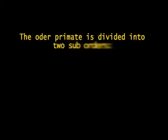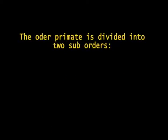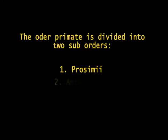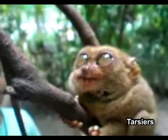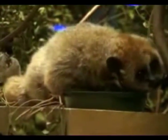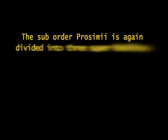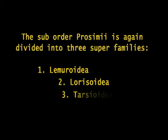The order Primates is divided into two sub-orders: Prosimiae and Anthropoidea. The sub-order Prosimiae includes animals such as lemurs, tarsiers, and lorises, which are thought to be precursors of the simians, i.e., monkeys. It is divided into three super-families: Lemuroidea, Lorisoidea, and Tarsioidea.